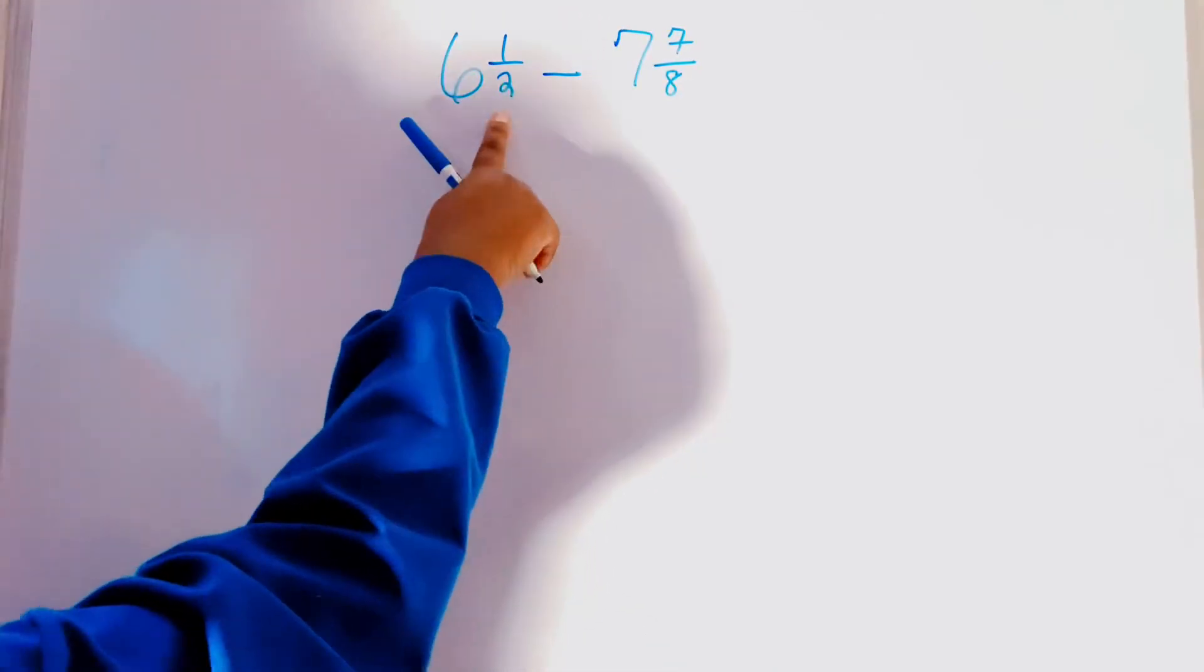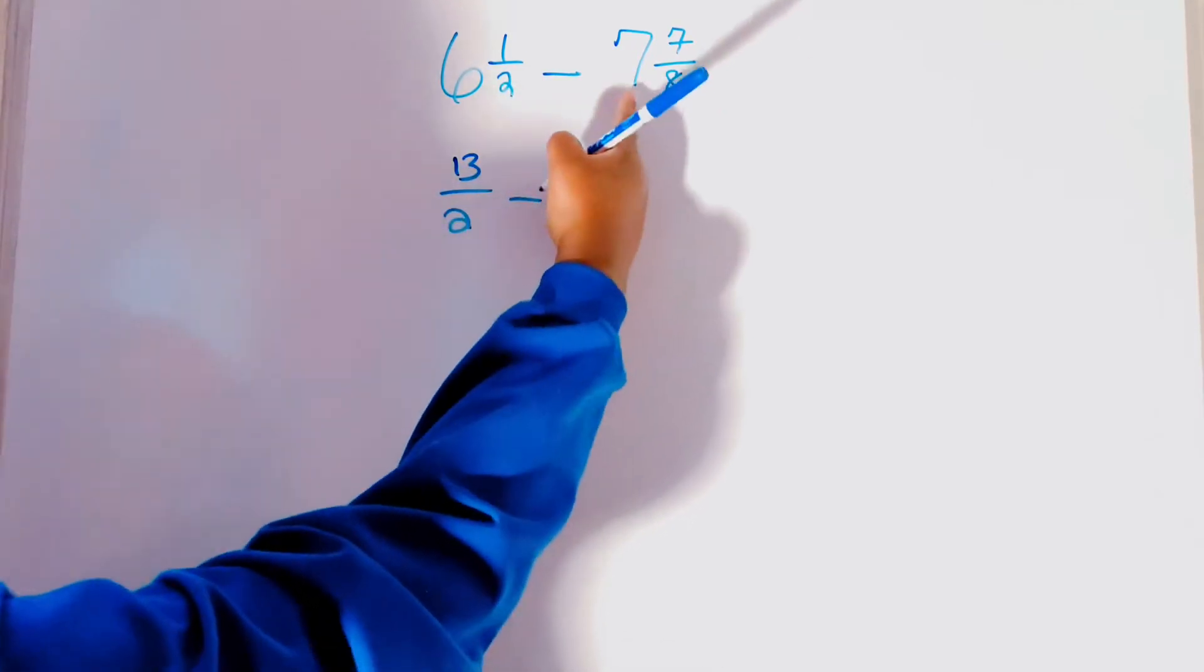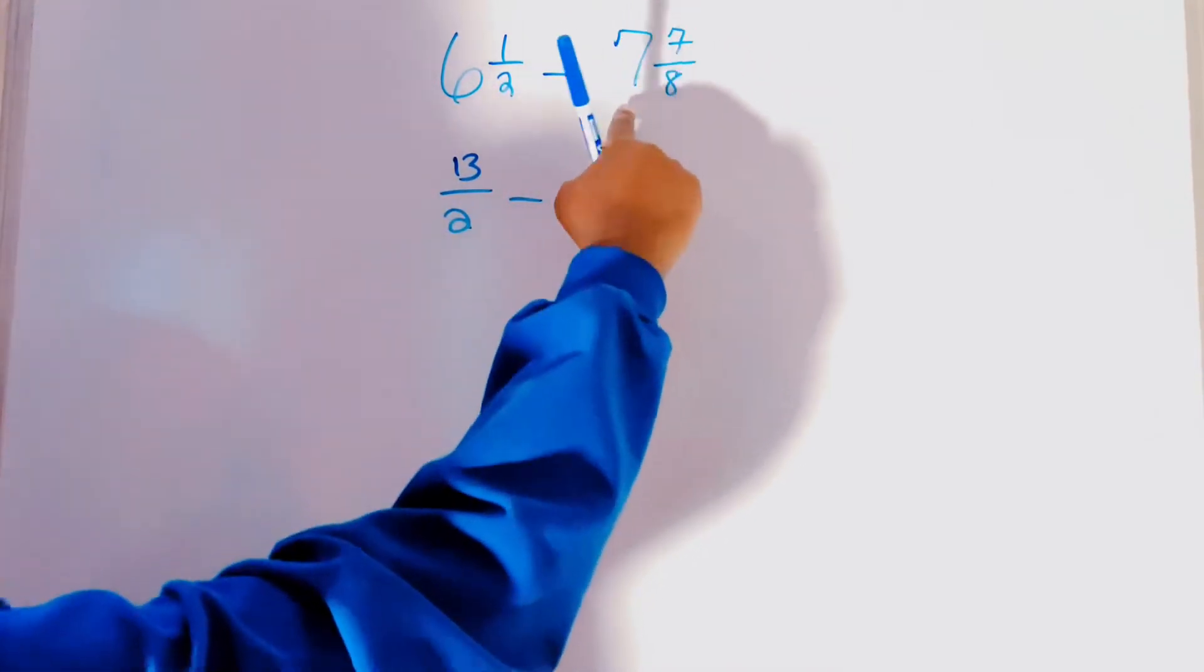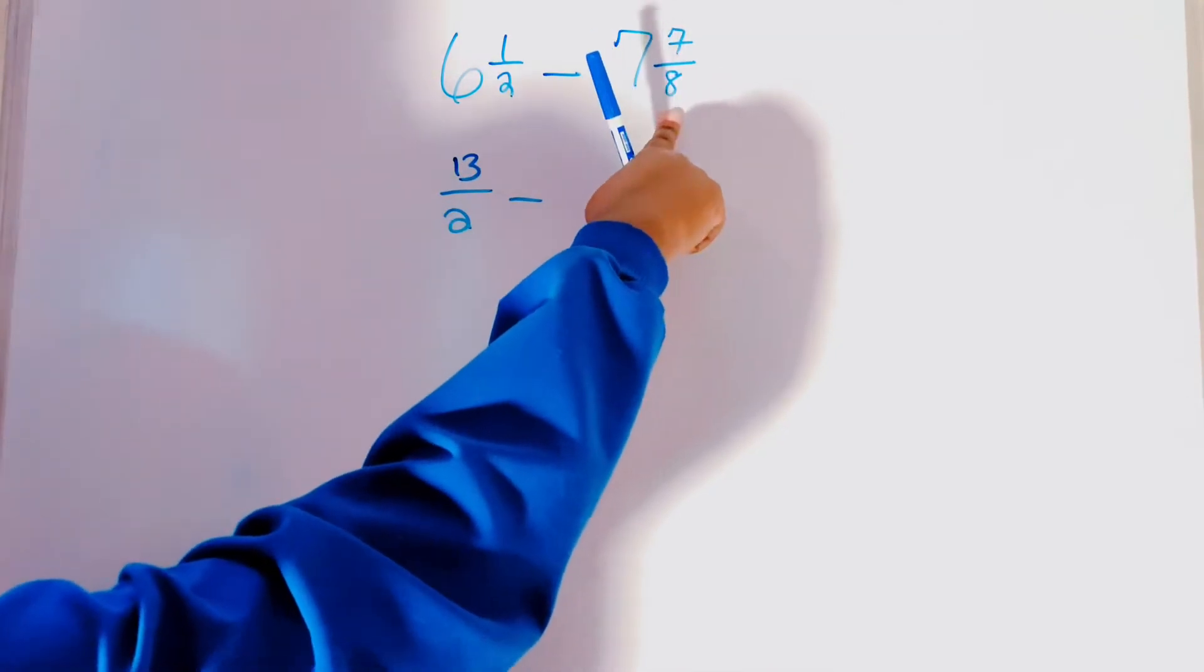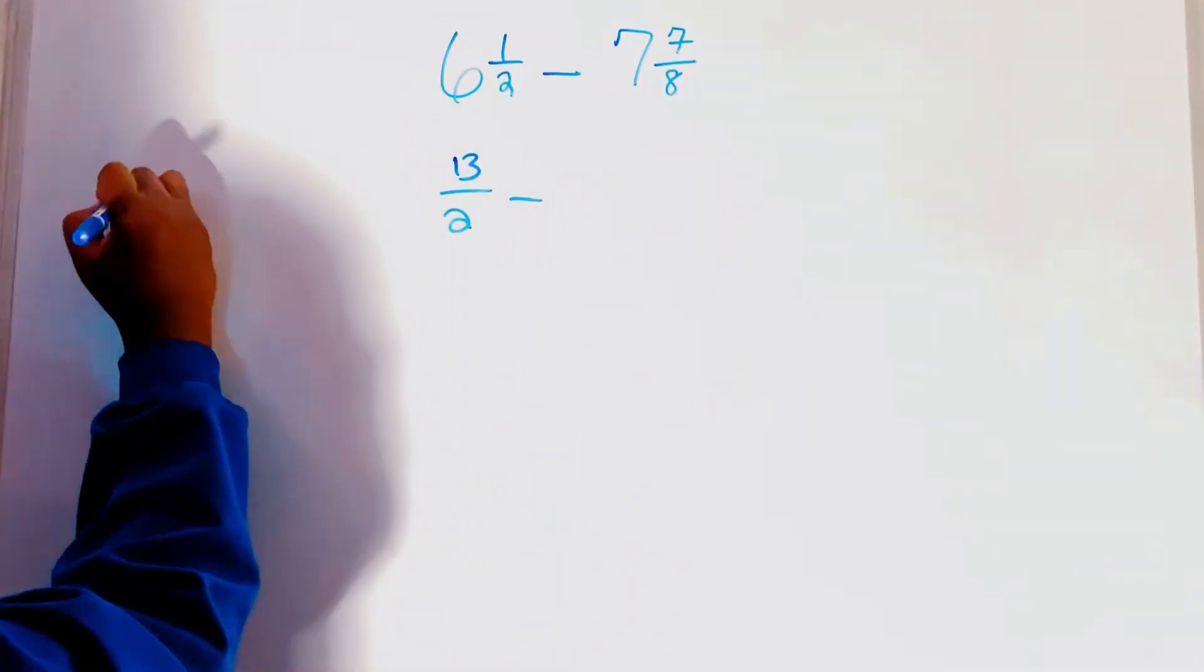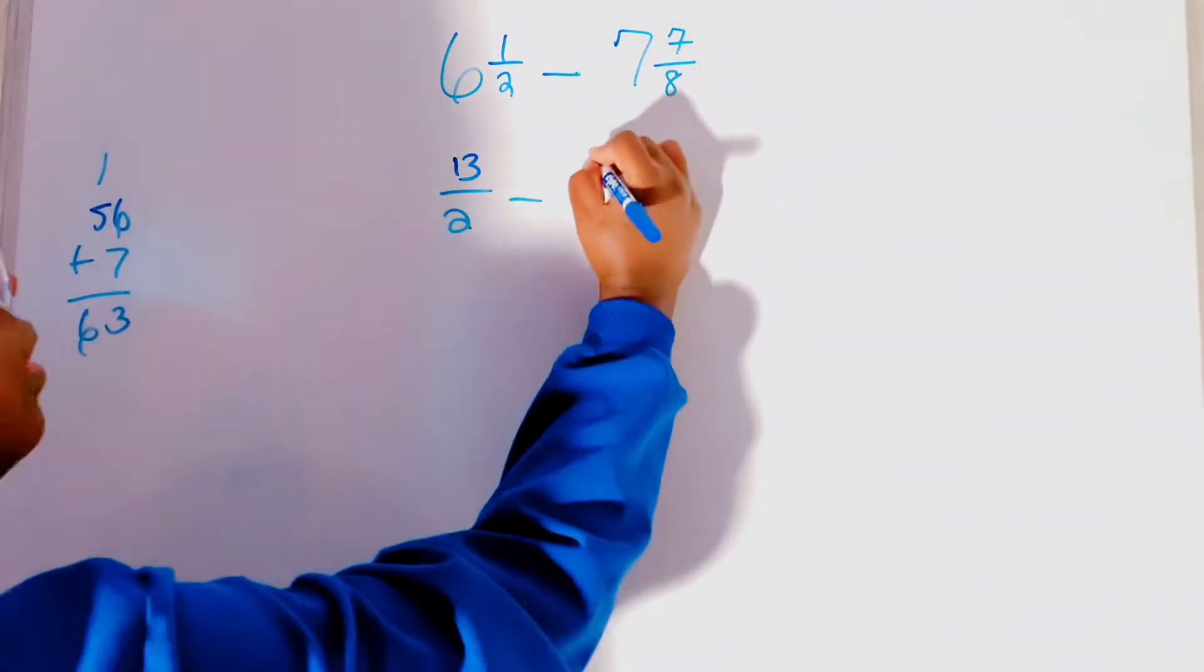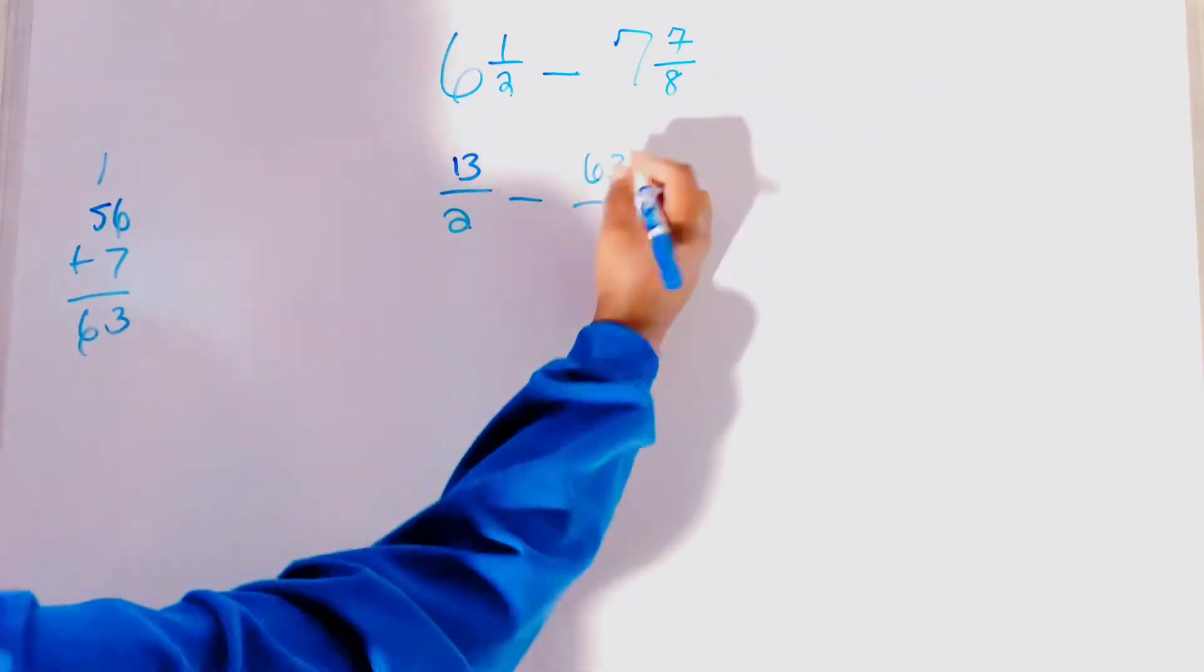Now, we're going to just get rid of this mixed fraction. 6 times 2 is 12. 12 plus 1 is 13. 13 over 2. Minus 7 and 7 over 8. 7 times 8 is going to give us 56. 56 plus 7 is 63 over 8.